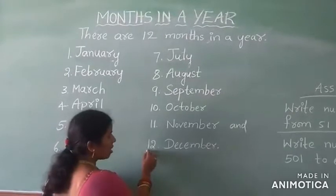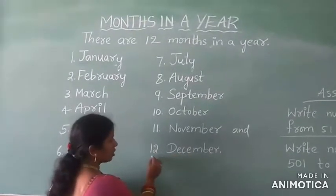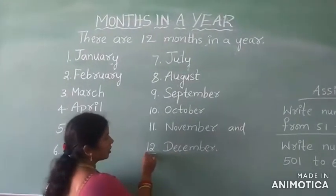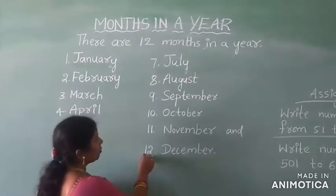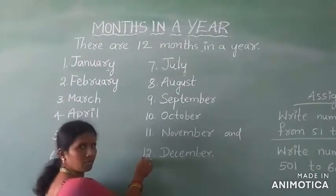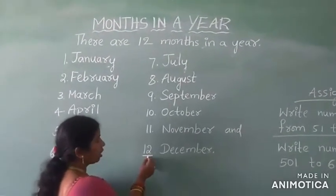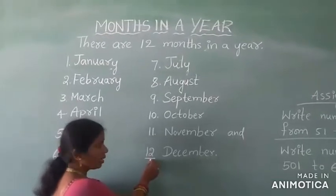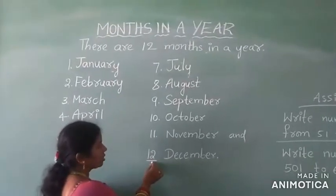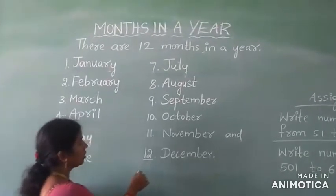December is the last month of the year. How many months are there in a year? 12 months. How many? 12 months are there in a year.